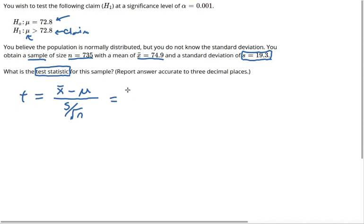Plugging in what we need, we have 74.9 minus 72.8. It's important to realize what goes where. The sample mean goes first and the claimed mean, or population mean, goes second. Put your standard deviation on the bottom, divided by the square root of your sample size.